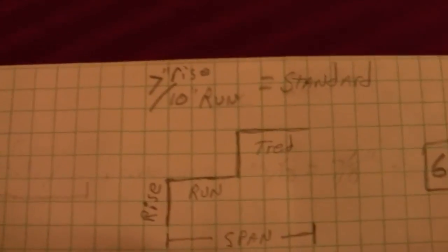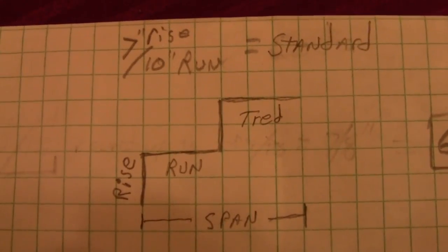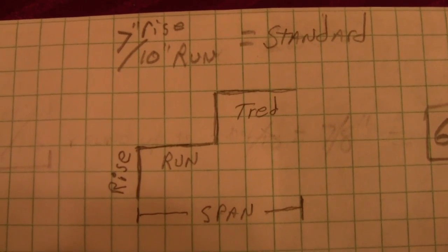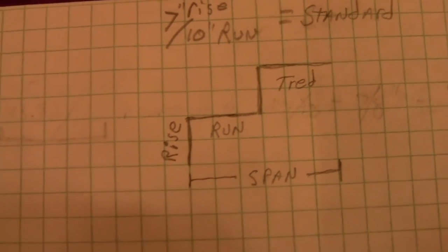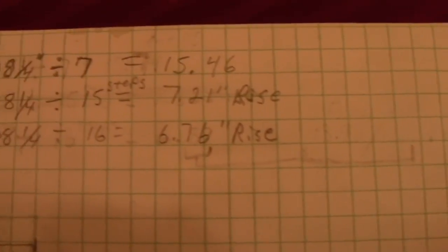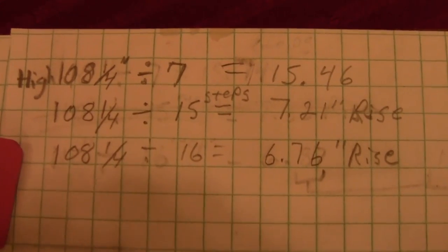Why 7? Well, I go back to the standard basically, and the standard is a 7 inch rise. So how many units of 7 will come out of 108 and a quarter?